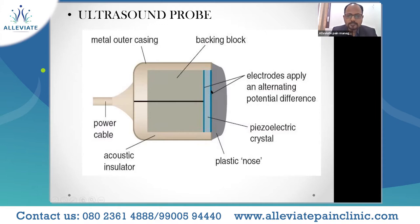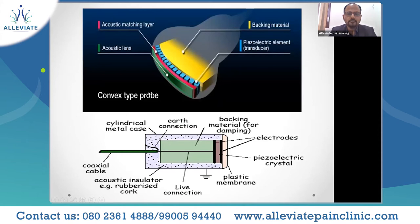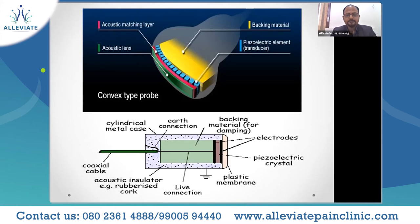The energy must be contained within the device, which is why you have the acoustic insulator, metal outer casing, and backing block, as well as the plastic nose to help in smooth scanning. At the tip of the transducer, there is the array of crystals covered by an acoustic matching layer, then the backing material, and the acoustic lens which is used to magnify the sound waves produced.